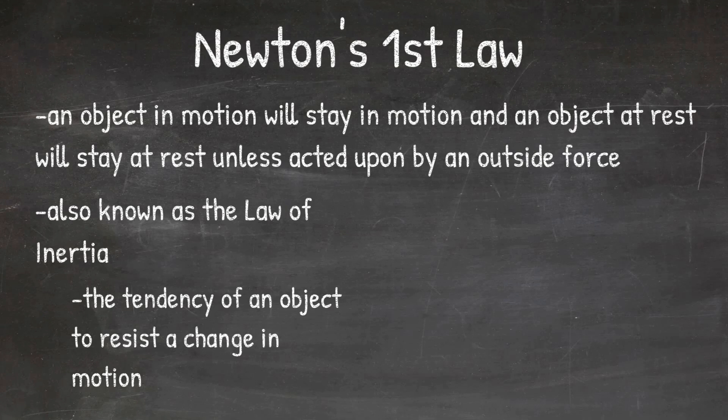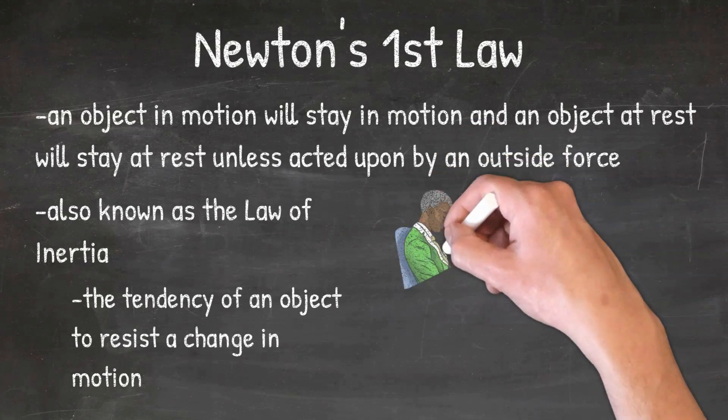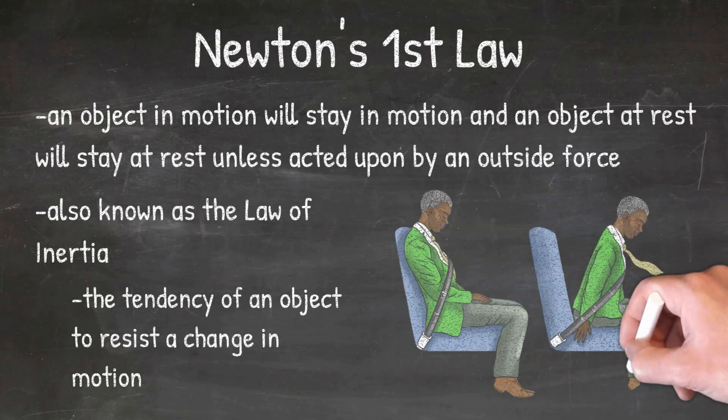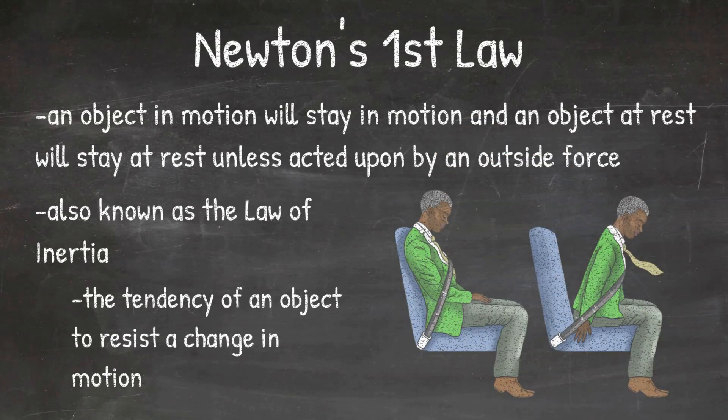A classic example of this is when you're riding in the car and the car suddenly comes to a stop. When this happens, you continue to move forward until the seatbelt stops your forward movement. You have probably felt this before — being jerked backwards by the seatbelt when the car slams on its brakes.